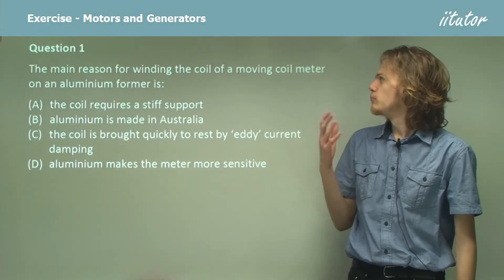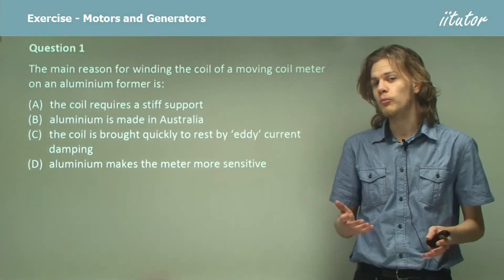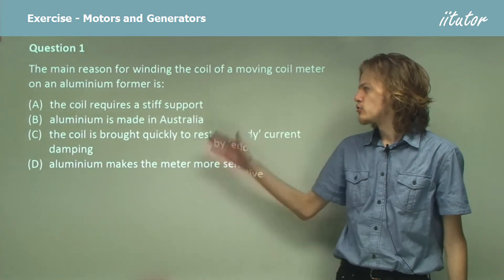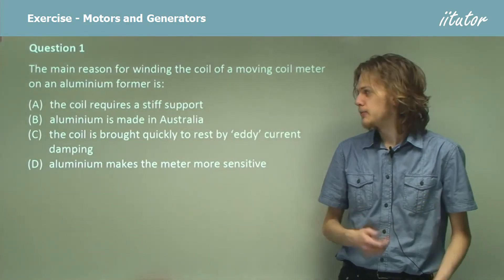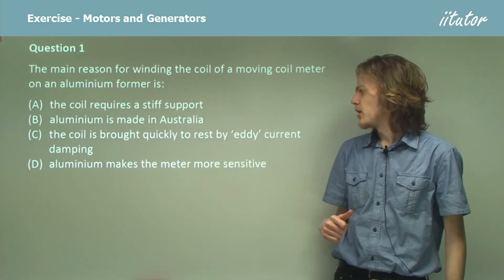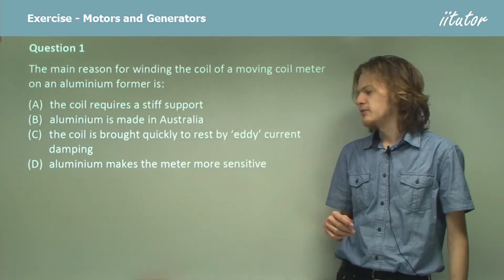The main reason for winding the coil of a moving coil meter on an aluminium former is either because the coil requires a stiff support, aluminium is made in Australia and so it's easy to get, the coil is brought quickly to rest by eddy currents, or aluminium makes the meter more sensitive.